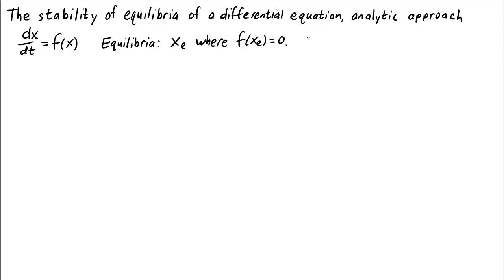In the previous video, we learned how to determine the stability of the equilibria using a graphical approach. By looking at the graph of the function f, we could determine whether or not initial conditions that are near the equilibrium approach the equilibrium — in which case it would be stable — or move away from the equilibrium, in which case it would be unstable.